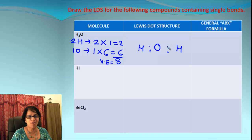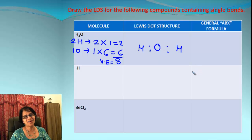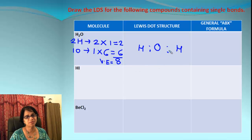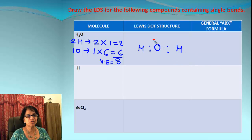We place two electrons between the central atom and each hydrogen to indicate the bond. At this point, out of eight electrons we have used up four, but there are still four remaining. We show those four electrons on the top of oxygen as lone pairs.